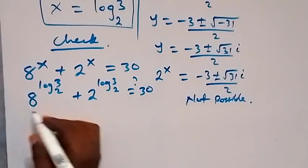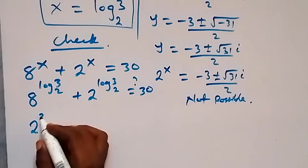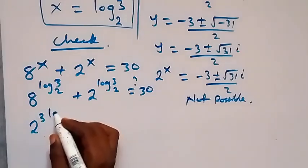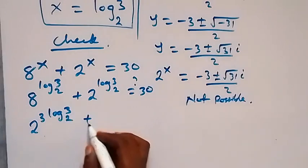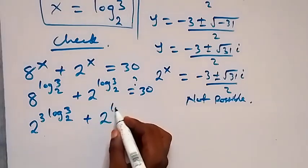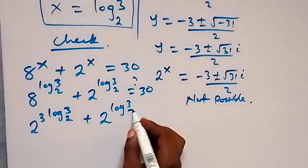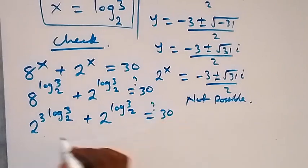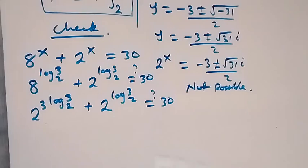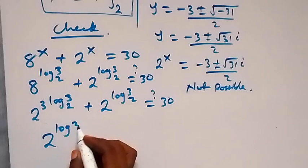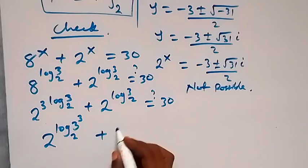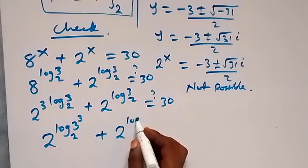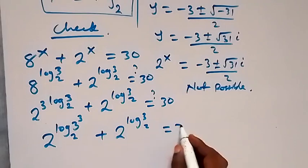Let's change 8 to a base 2 number: 8 equals 2 raised to power 3. So we have 2 raised to power 3, raised to power log 3 base 2, plus 2 raised to power log 3 base 2, equals to 30. Taking the 3 up, we write this as 2 raised to power log 3 raised to power 3 base 2, plus 2 raised to power log 3 base 2, equals to 30.